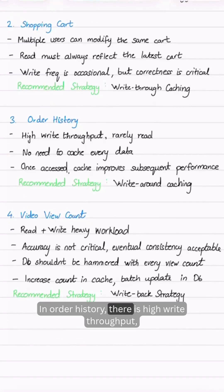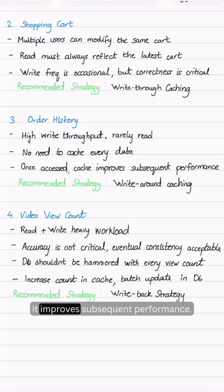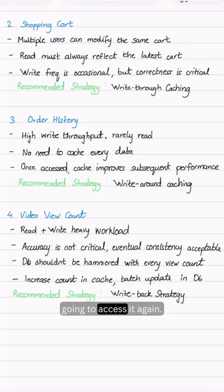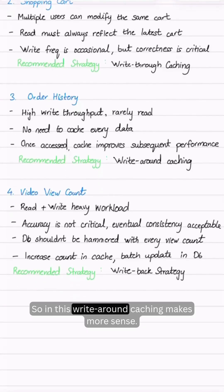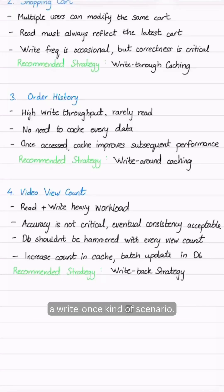For order history, there is high write throughput, it is rarely read, and if the cache is accessed, it improves subsequent performance. For example, if you go to 'My Orders,' there is a higher chance you will access it again in the next few minutes. So write-around caching makes more sense here. Other strategies can be avoided since this is a write-once kind of scenario.